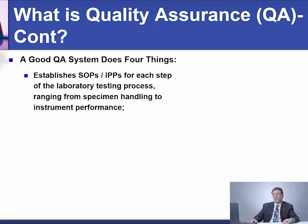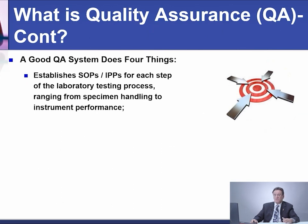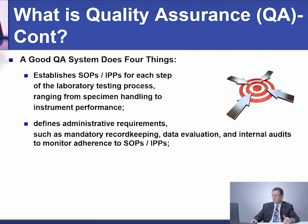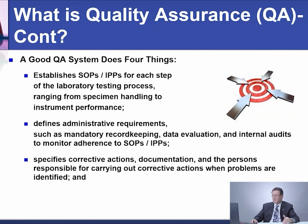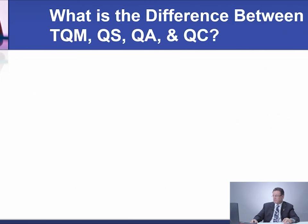A good quality assurance system does four things. First, establish SOPs — Standard Operating Procedures — also known as IBPs or Internal Policy Procedures — for each step of the laboratory testing process, ranging from specimen handling to instrument performance. Second, define administrative requirements such as mandatory recording, data evaluation, and internal audit to monitor adherence to the SOPs. Third, specify corrective action documentation and personnel responsible for carrying out corrective actions when problems are identified. And finally, sustain high quality employee performance.